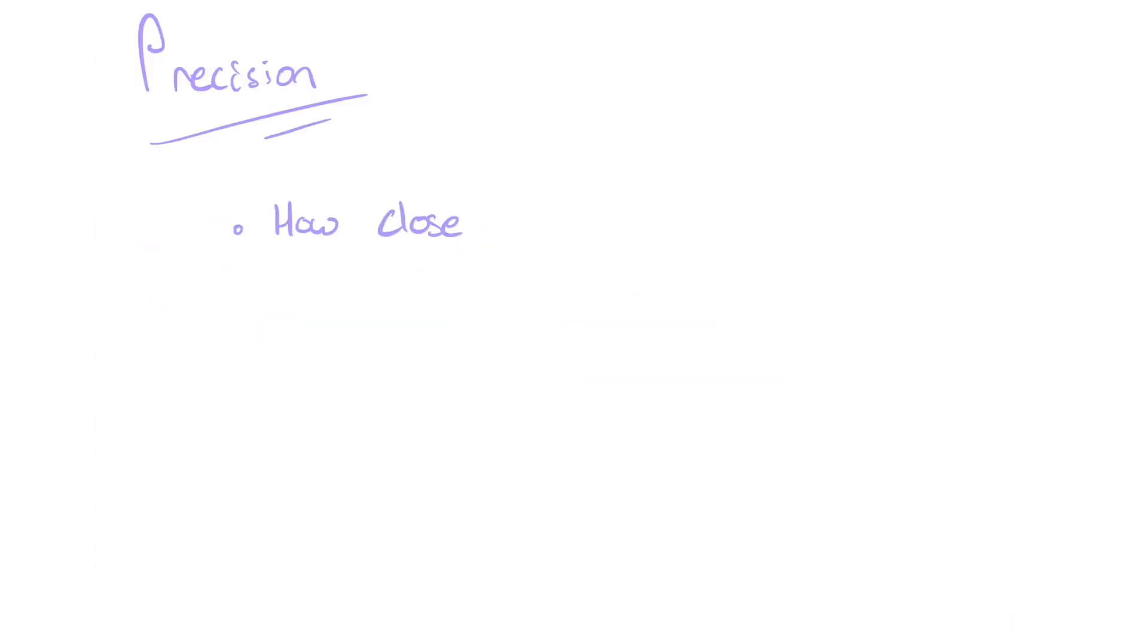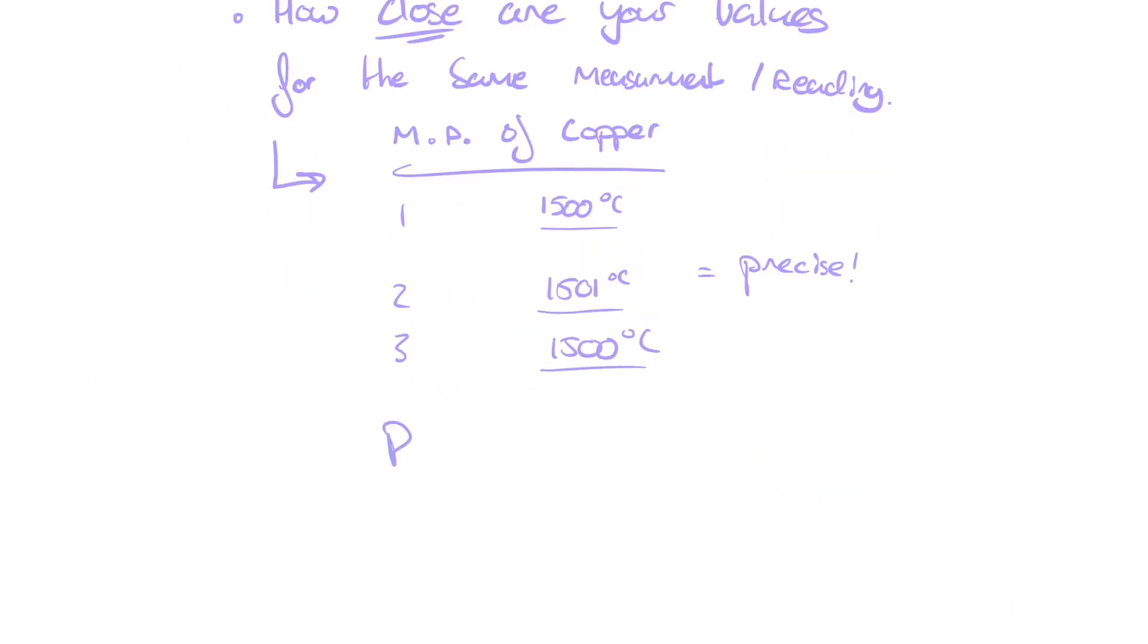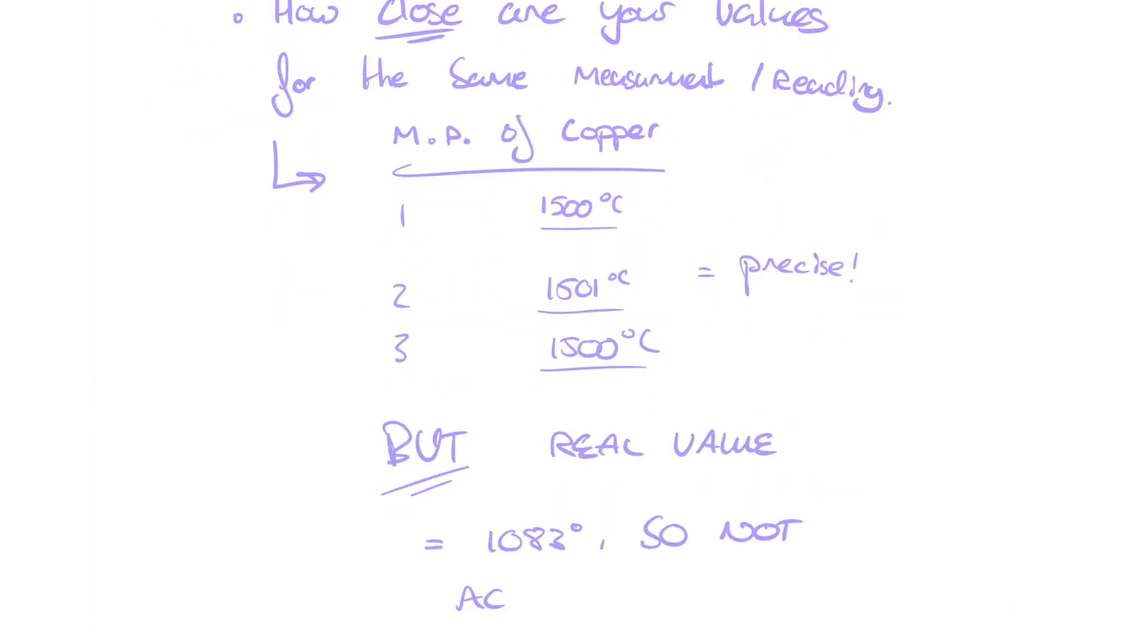Precision. Precise measurements are ones in which there are very little spread about the mean value. You can actually be very precise but inaccurate at the same time. It's like playing darts and you aim for the bullseye and you hit the same spot every time but it's a spot on the wall not the dartboard when you're aiming for the bullseye.